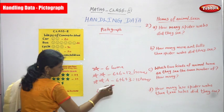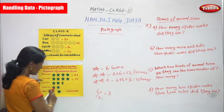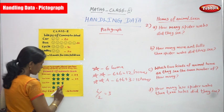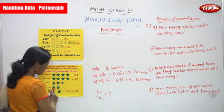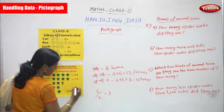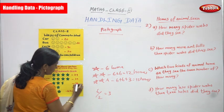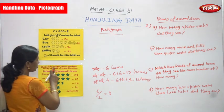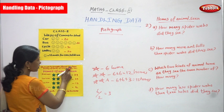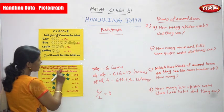The next one is spider webs. This is also two stars, so each star represents six homes — six plus six equals twelve. So spider webs is twelve animal homes.